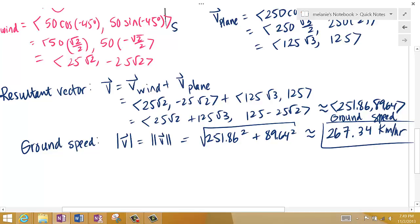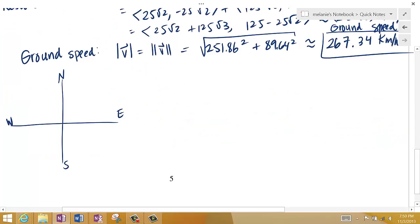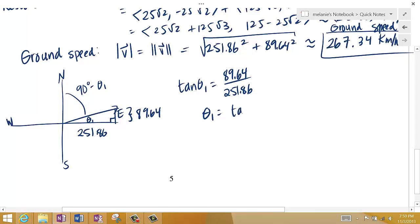I also want the true course. So let's draw another triangle. I have something over here. Not to scale but that's okay. So let's call this theta 1. If I drop perpendicular down I know that this length right here is 251.86 and this length right here was 89.64. I can figure out what theta is. If I know what theta 1 is then I can say well this is 90 degrees minus theta 1 and that will give me a bearing from north. So let's figure out what theta 1 is first. So tangent theta 1 is 89.64 divided by 251.86. To solve for theta 1 I take the inverse tangent.